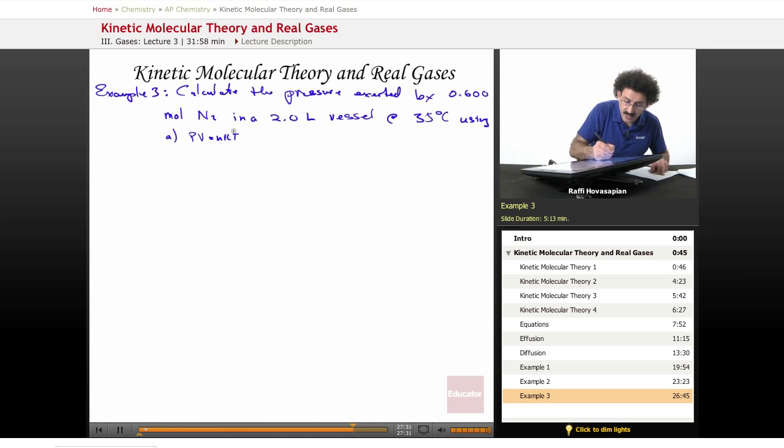PV equals nRT, and B, the van der Waals equation. The van der Waals equation was that adjusted one, the P minus A over n over v squared, that one. The van der Waals equation.